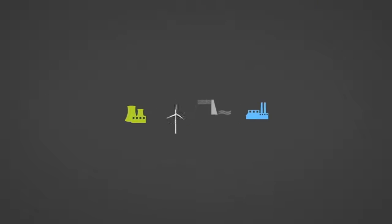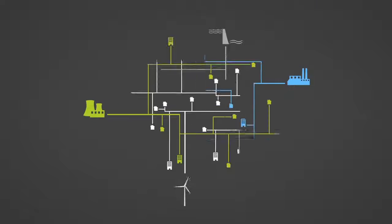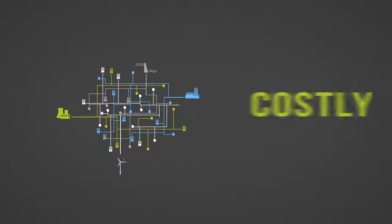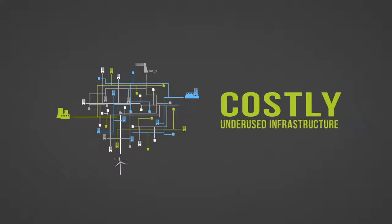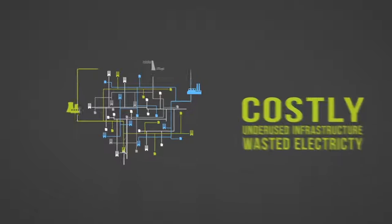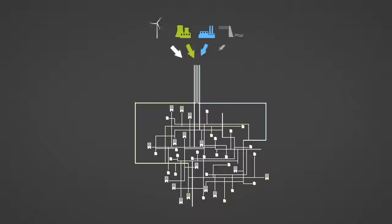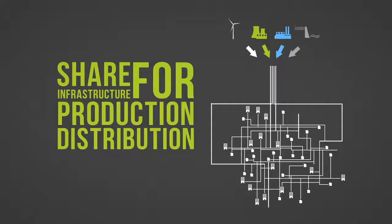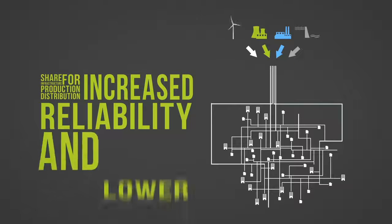Prior to the invention of the modern grid, electricity producers each developed their own distribution systems for delivering electricity to customers. This system was costly and often led to underused infrastructure and wasted electricity. The modern grid was invented to allow various producers to share infrastructure for production and distribution, which led to increased reliability and lower costs.